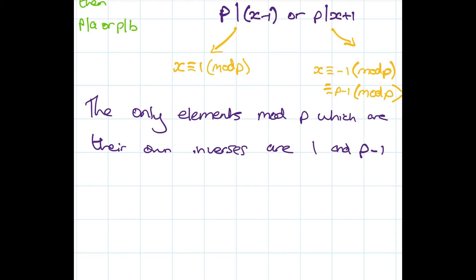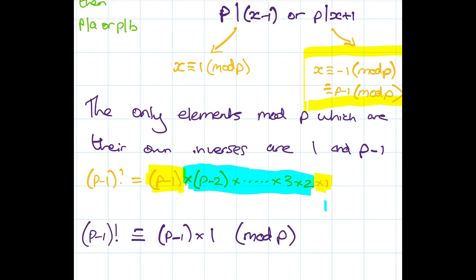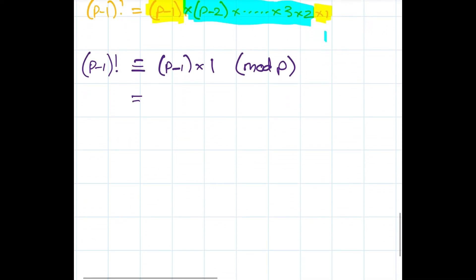If we head back to our P minus 1 factorial, which was P minus 1 times P minus 2 times 3 times 2 times 1, all of these elements here, P minus 2, P minus 3, all the way down to 3 and 2, are going to cancel because they are paired with their multiplicative inverse. So all we are left with is P minus 1 and 1. So P minus 1 factorial is congruent to P minus 1 times 1 mod p. And just as we did before, we can change P minus 1 to minus 1. So this is indeed congruent to minus 1 mod p. That is the proof of Wilson's theorem.